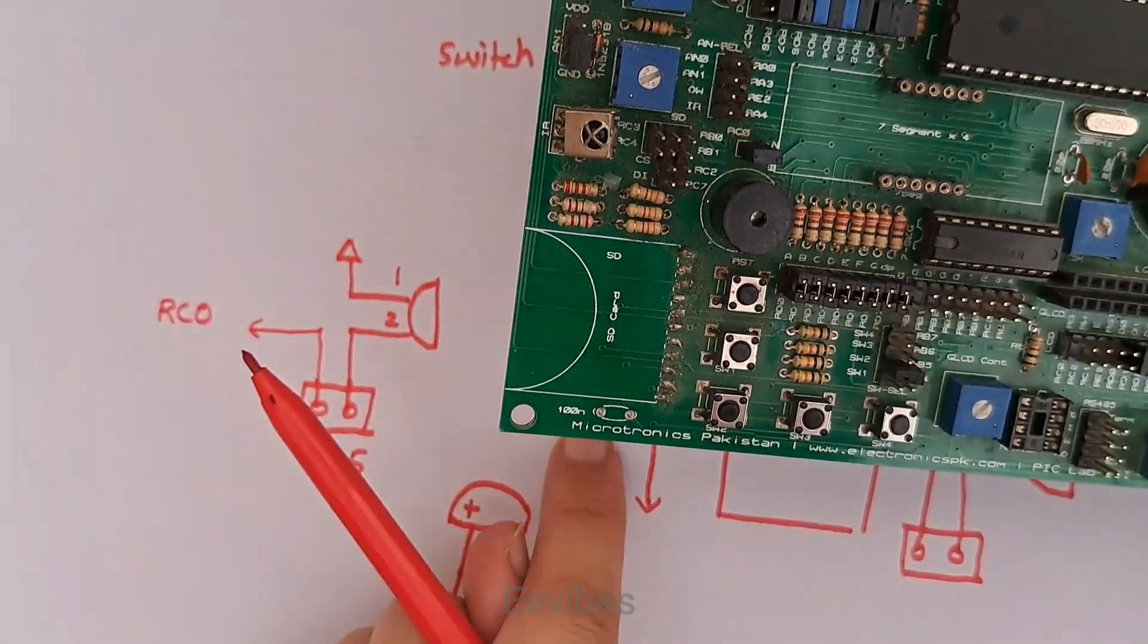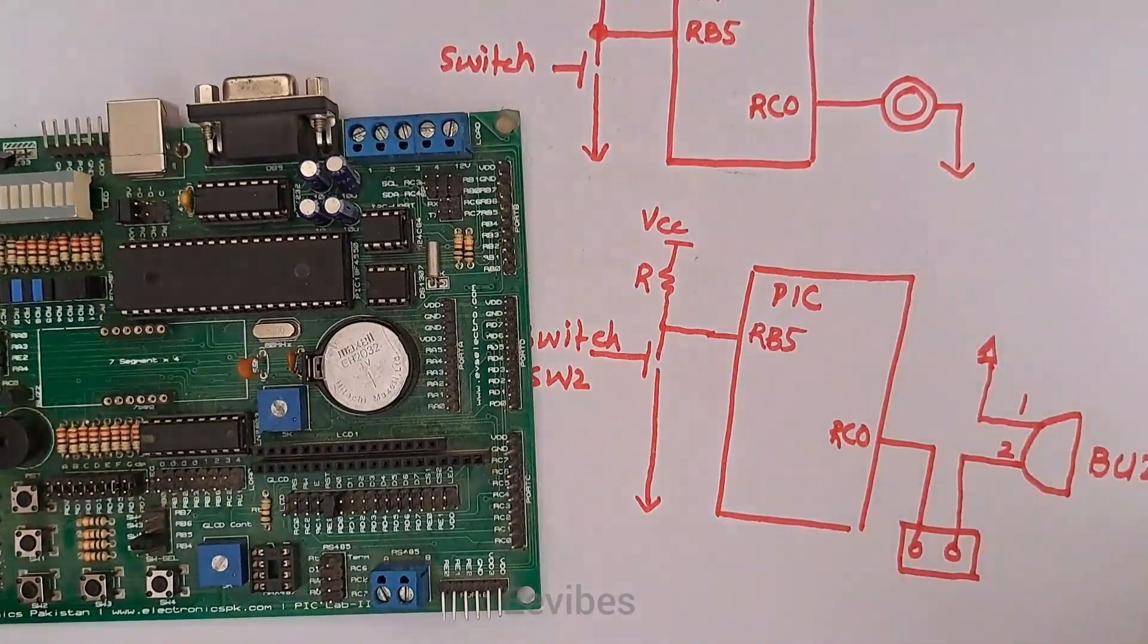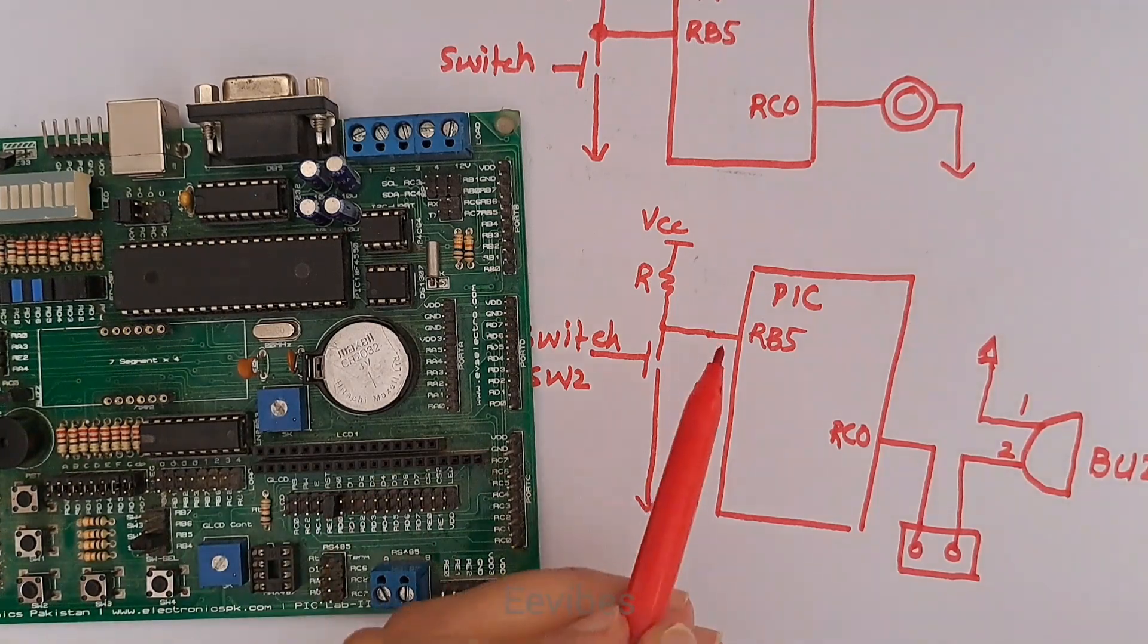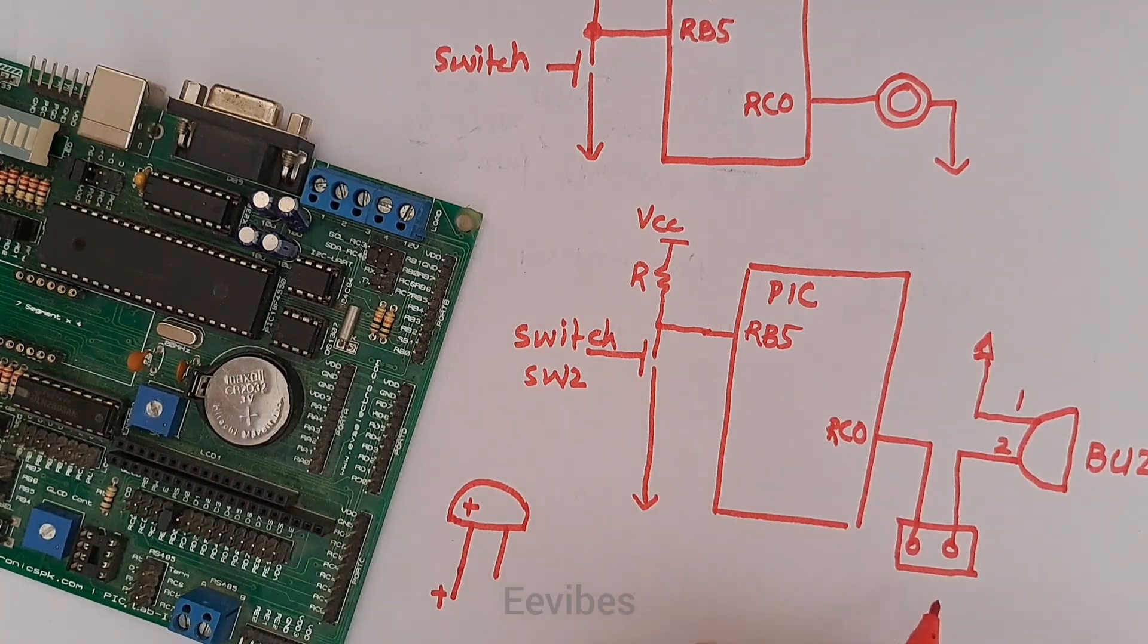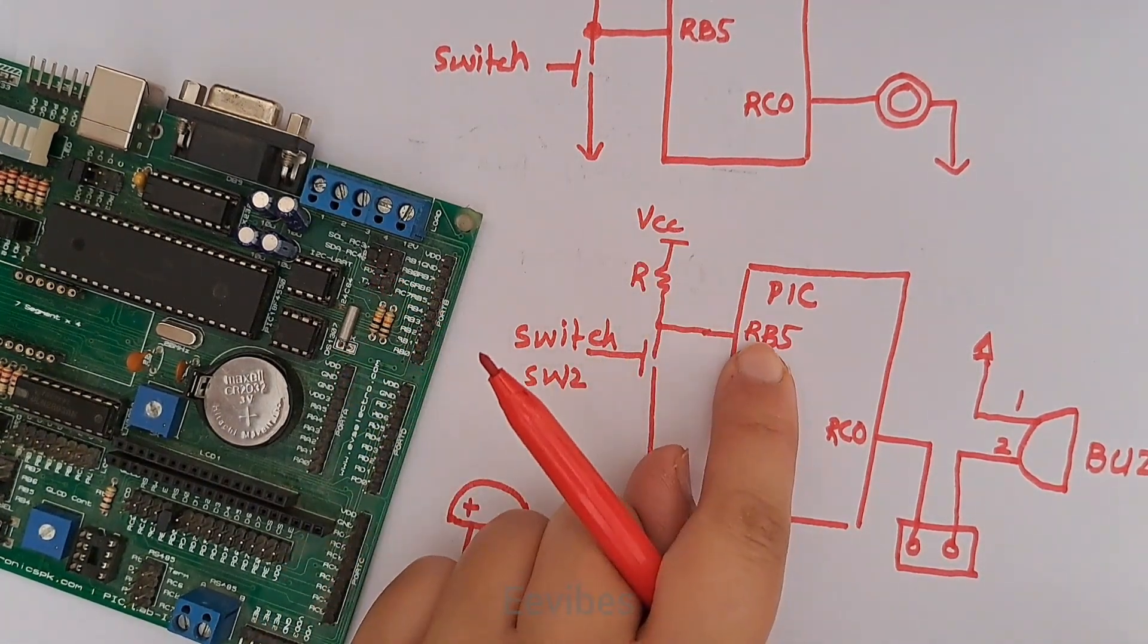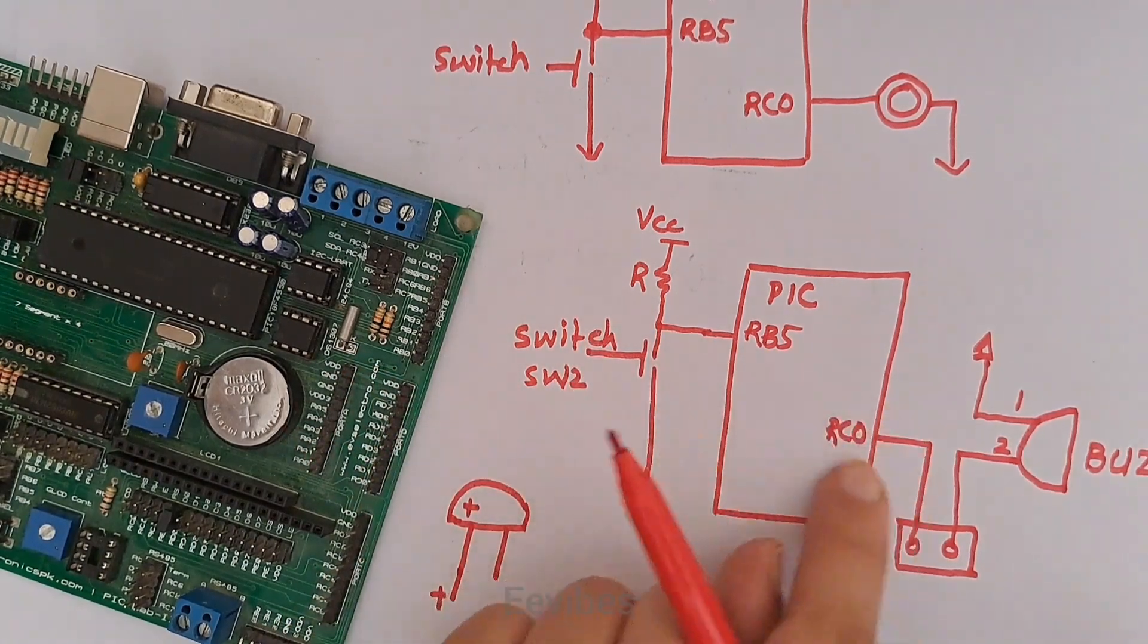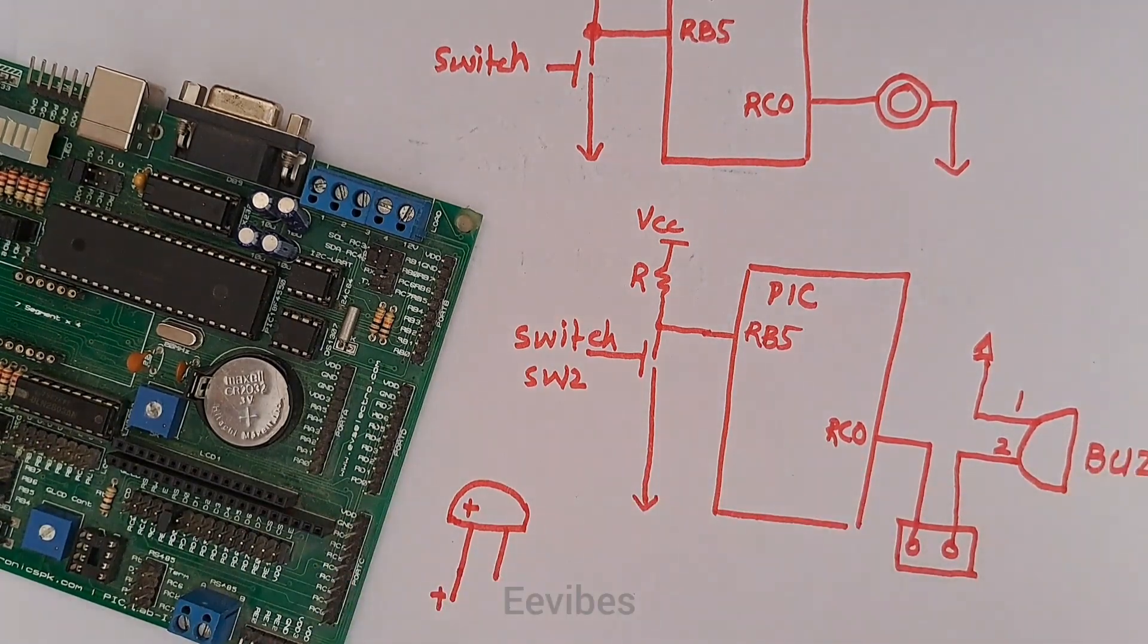Now let's see how it works, but before that this is the complete circuit diagram where you can see this is junction J25, this is switch 2, while VCC is connected and the switch is connected at the fifth pin of port B and the 0th pin of port C is connected with the buzzer.